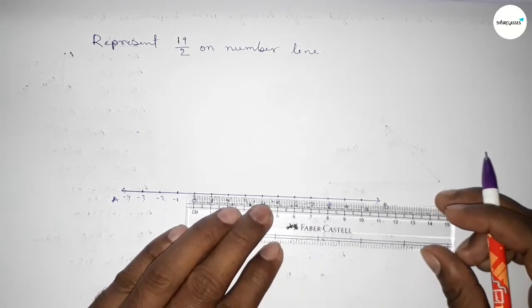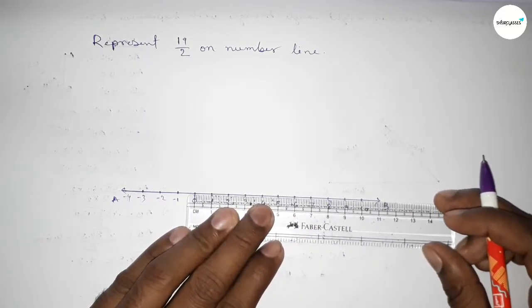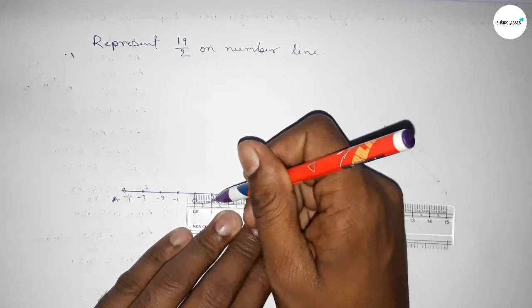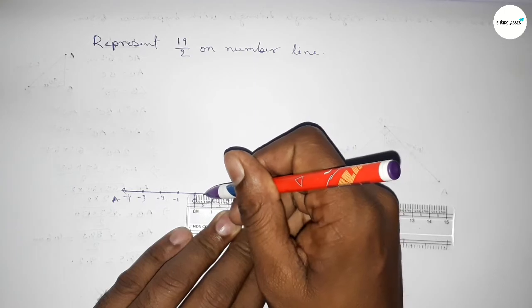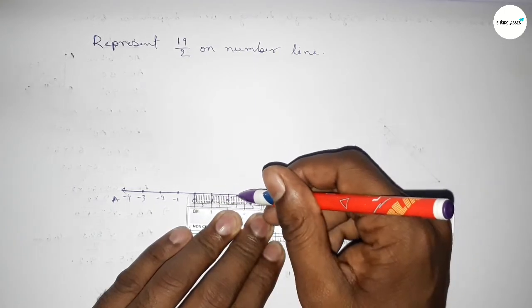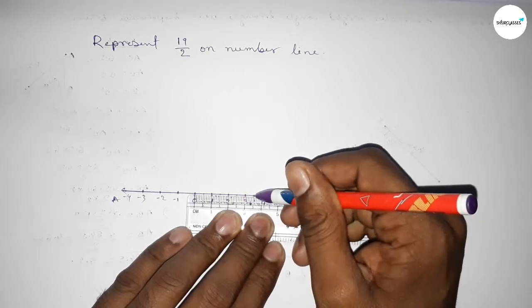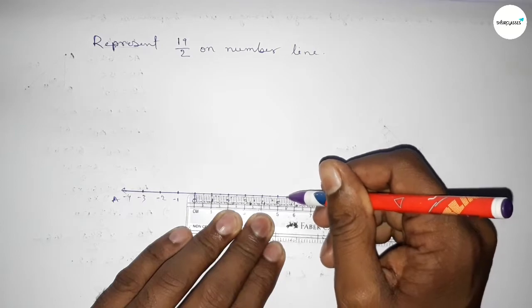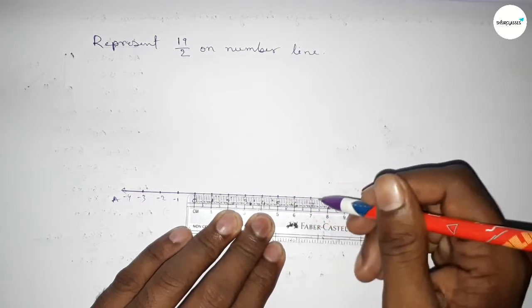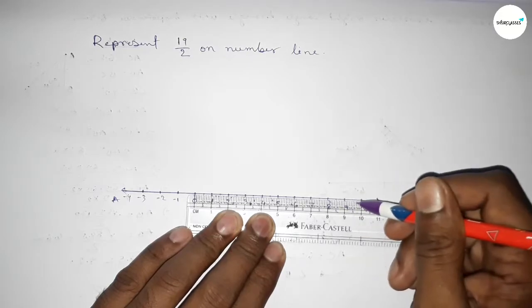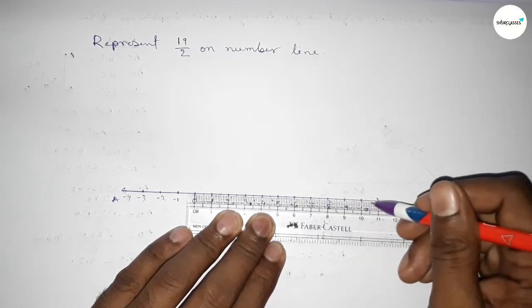Now we have to divide the length 0 to 1, 1 to 2, 2 to 3, and so on by 2. So first we have to take the half between any two numbers - 0 to 1, 1 to 2, and so on. First taking the half of two numbers.